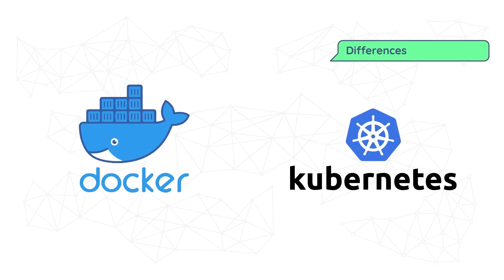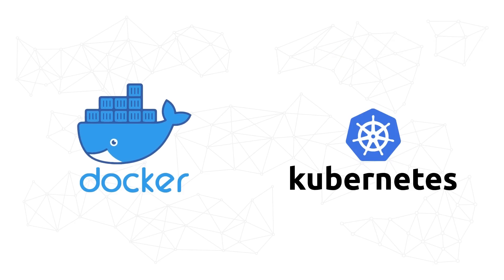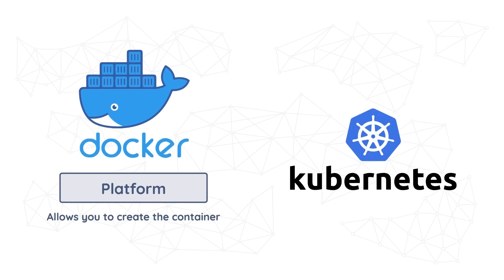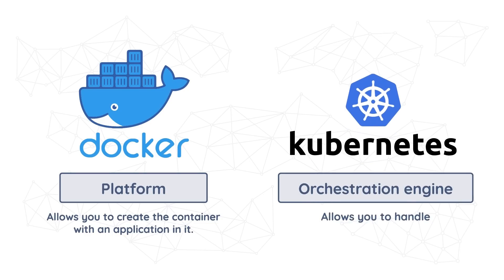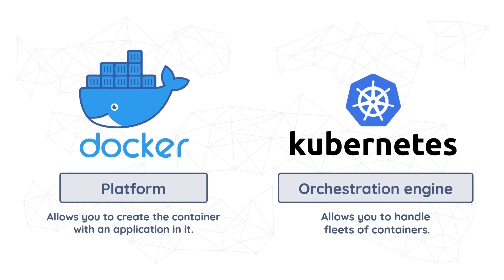People are eager to compare Docker and Kubernetes, but the comparison has virtually no meaning because they're two completely different things. Docker is the platform that allows you to create a container with an application in it and then work with that application. Kubernetes, on the other hand, is the orchestration engine that handles fleets of containers — automatically managing deployment, scaling, networking, and container failover. A meaningful comparison would be between Kubernetes and Docker Swarm, which is Docker's own orchestration engine.